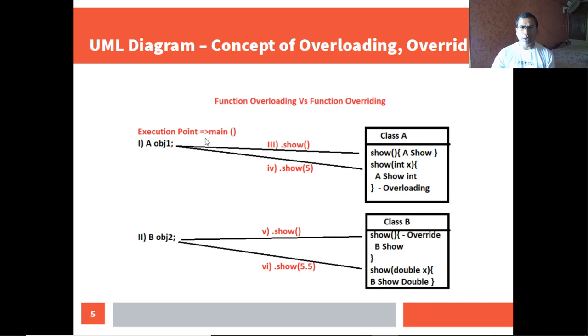In main program I will create two objects: object one of class A, object two of class B, and then I will call these functions. Now since A is object of class one, these two functions will get executed. Similarly object two is of B, so these two functions will get executed.